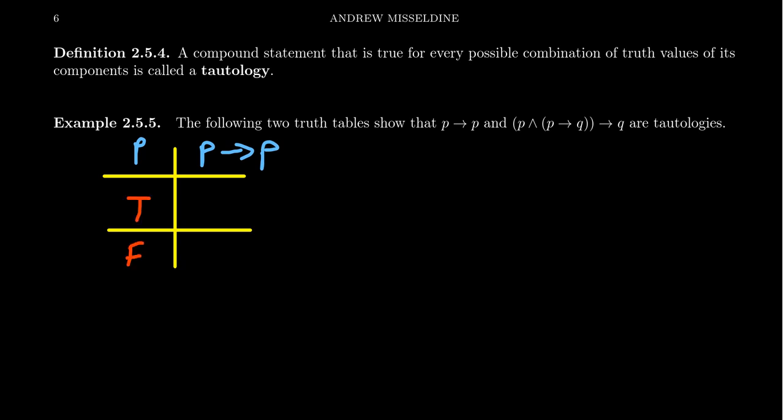Well, p could be true, p could be false. Now if p is true, then we're looking at the statement T implies T—that's a true statement for conditionals. And if you look at the next row, you're looking at p implies p—that's false implies false. That's actually a true statement; it's vacuously true, but still true.